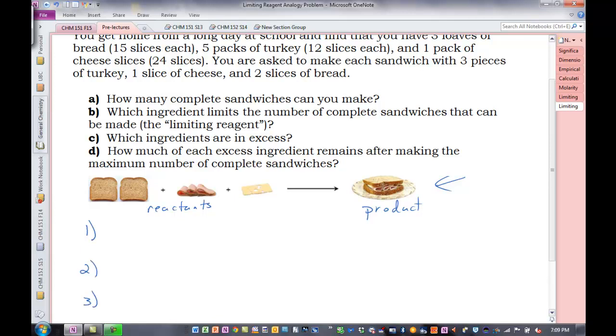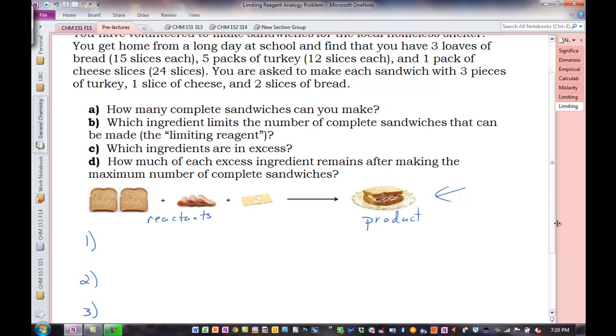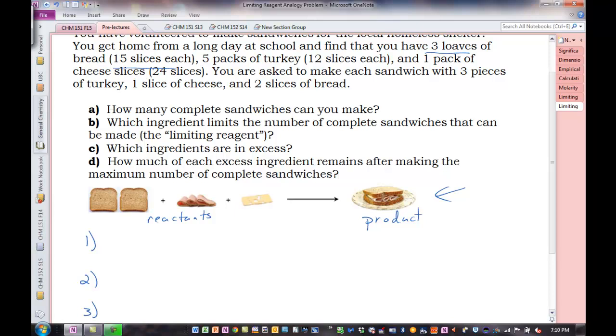So we are going to take the bread, and based on the number of slices of bread, how many sandwiches could we make? And then the turkey: based on the slices of turkey, how many sandwiches could we make? And then the cheese: based on the slices of cheese, how many sandwiches can we make? Whichever one limits how much product we can get, that's our limiting reagent. All right, so let's start with the bread. We have three loaves of bread, 15 slices each, 45 slices. Now we know we need an even number of slices, so we are going to start with 44 slices of bread. And we know for each sandwich, we need two slices of bread. What is that 1 to 2 ratio equivalent to? Yeah, our mole ratio in a stoichiometry problem. There's our ratio between product (the sandwich) and our reactant. Slices of bread cancel, and we get 22 sandwiches.